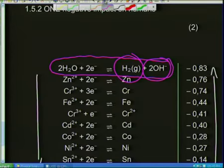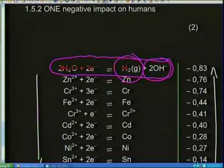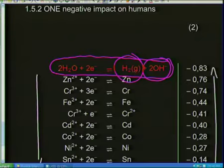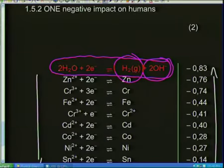The reaction right up at the top of the redox table is the one producing hydrogen. It's a reversible reaction on the table, but when you write it down, you use a single arrow because we're asking the reaction to go in one direction only. So: 2H2O + 2e⁻ → H2 + 2OH⁻.